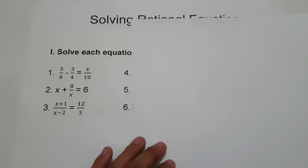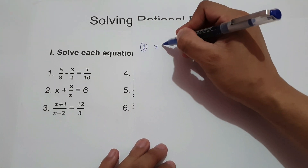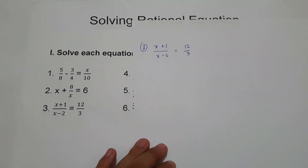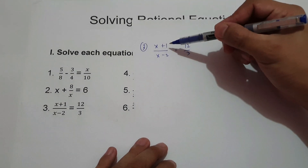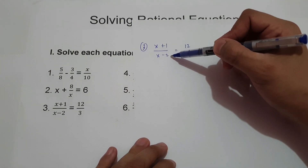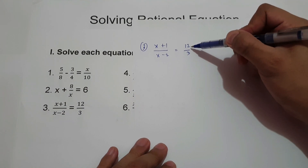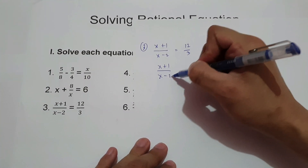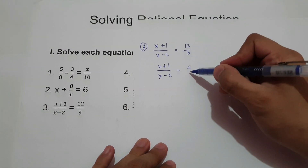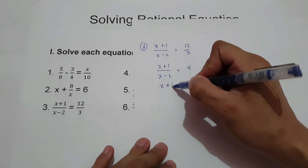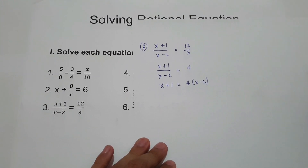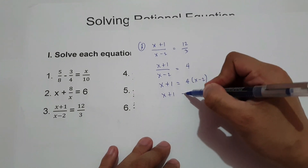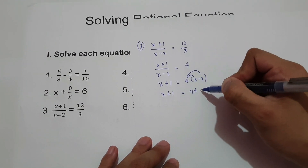On example number 3, we have x plus 1 over x minus 2 equals 12 over 3. In this example, you simply cross multiply — x plus 1 multiplied by 3, and x minus 2 multiplied by 12. But in this case, you can divide 12 by 3, so we write x plus 1 over x minus 2 equals 4. Since we do not have a denominator on the right, we write x plus 1 equals 4 multiplied by x minus 2. Using the distributive property, we get x plus 1 equals 4x, and 4 multiplied by negative 2 is negative 8.